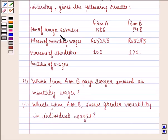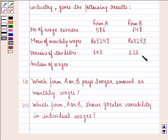The number of wage earners of firm A are 586 and for firm B are 648. The mean of monthly wages for firm A is Rs. 5,253 and for firm B is also Rs. 5,253. The variance of the distribution of wages for firm A is 100 and for firm B is 121. The first part asks which firm A or B pays a larger amount as monthly wages, and the second part asks which firm A or B shows greater variability in individual wages.